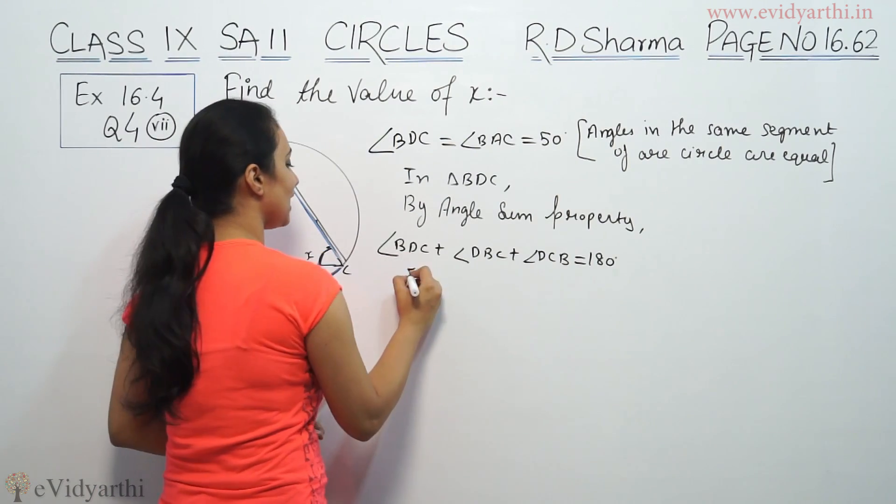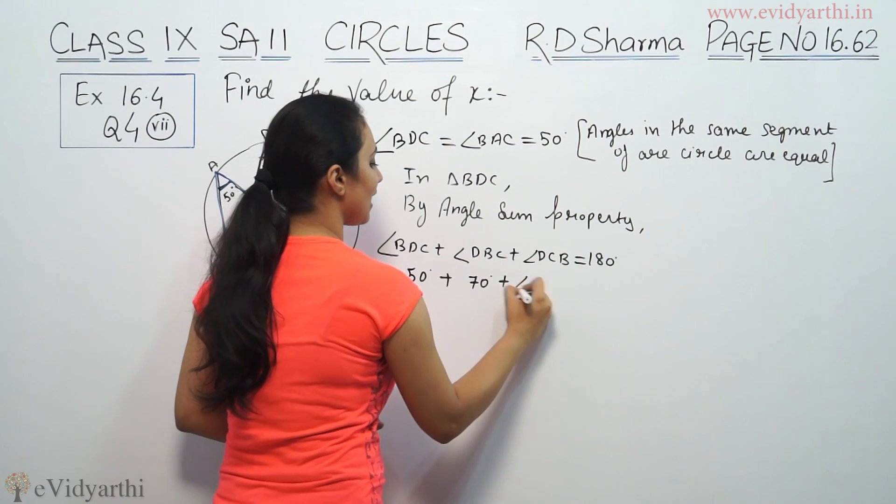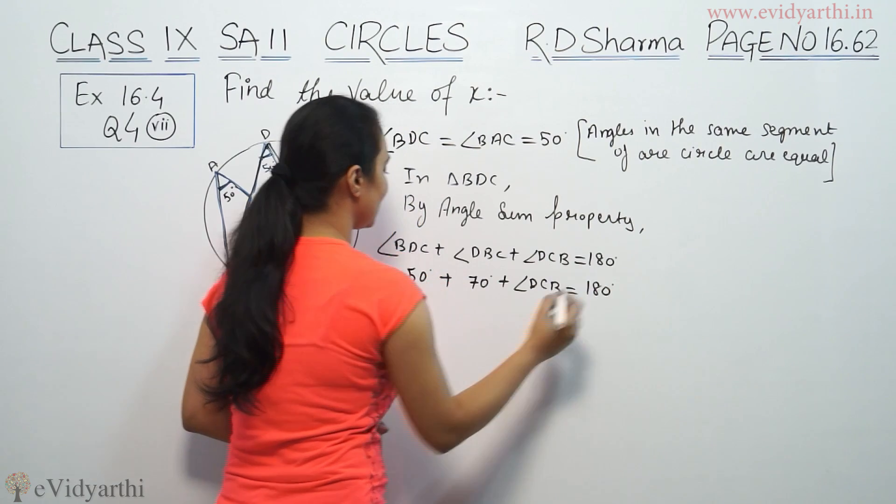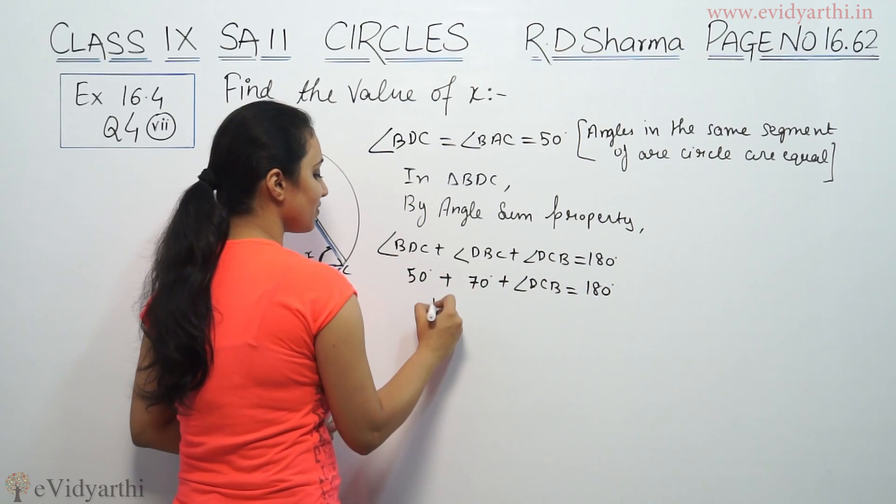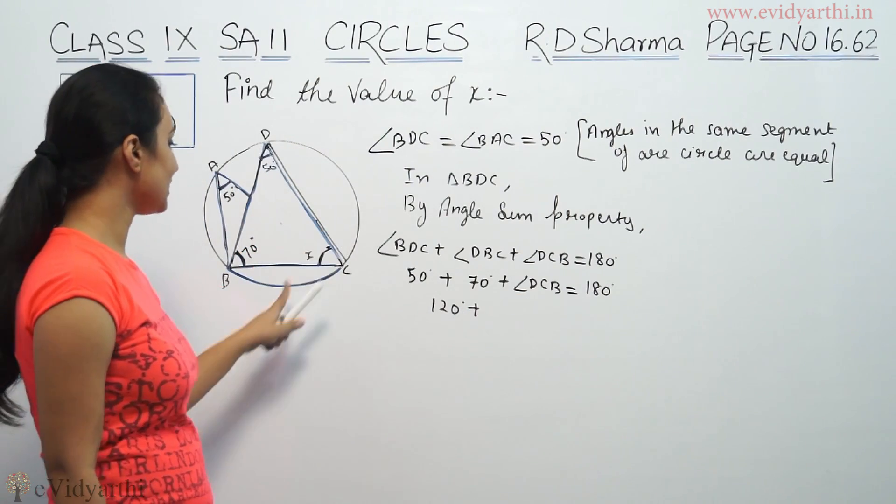So I will talk about BDC. So DBC is 50, BDC is 70, plus DCB is equal to 180. So 70 plus 50 is 120. DCB, this is x.